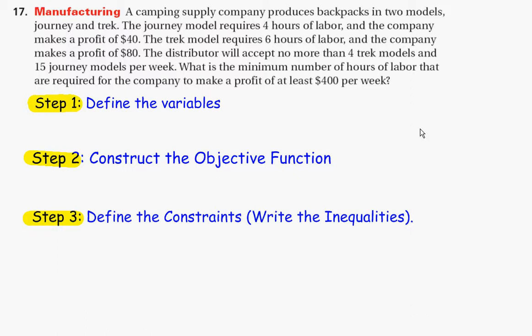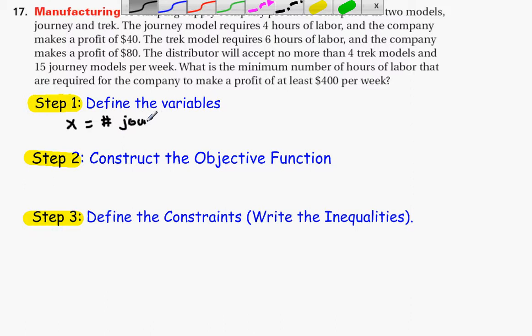Step number one: define the variables. Look in the problem to see what objects are being worked with. In this case, we are looking at two models of backpacks, Journey and Trek. We are going to let X represent the number of Journey backpacks, and we'll let Y represent the number of Trek backpacks.